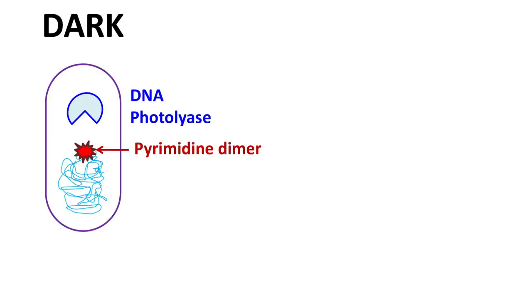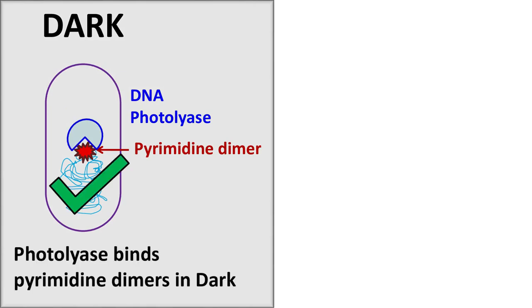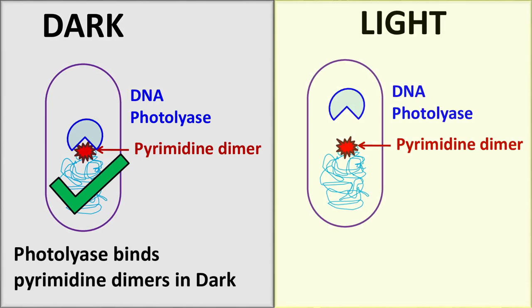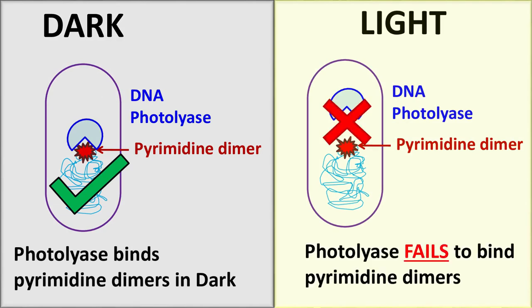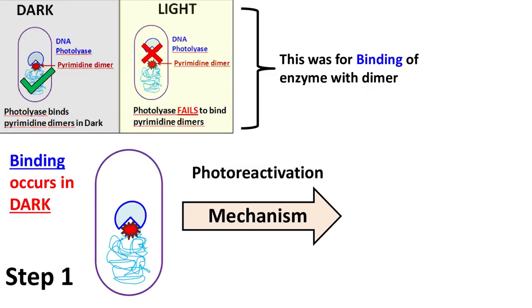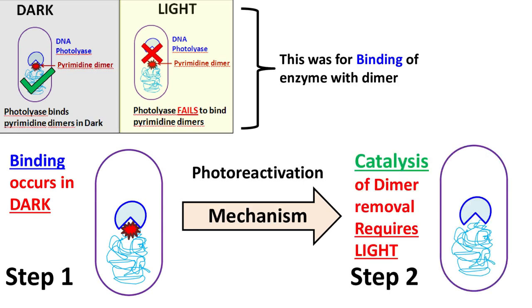In the absence of light, this enzyme binds the pyrimidine dimers. If light is present, then the binding of photolyase with pyrimidine dimers fails. Once photolyase binds with pyrimidine dimers, the presence of light activates the enzyme and it catalyzes the monomerization of the pyrimidine dimer. Hence, this phenomenon is known as photoreactivation — that is, light is required for the activity of photolyase.